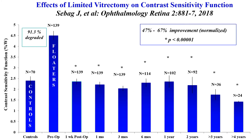Limited vitrectomy is our go-to procedure, and this graph demonstrates the effects of limited vitrectomy on contrast sensitivity function. On the left-hand side of the graph, you can see a comparison of 70 age-matched controls with 139 individuals who complained of bothersome floaters. Contrast sensitivity function was reduced on average by 92 percent in these individuals. Within one week of limited vitrectomy, each case normalized and remained normal for months and years thereafter.